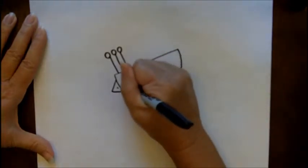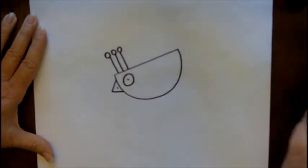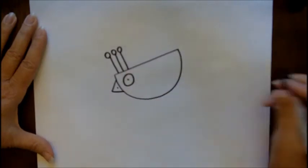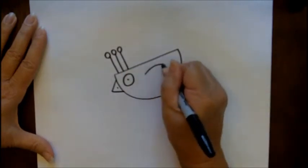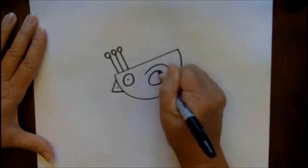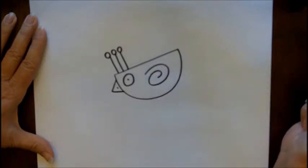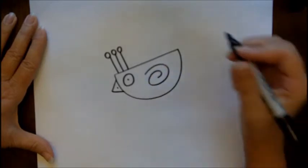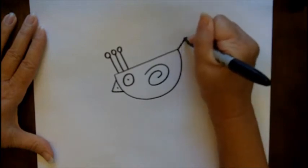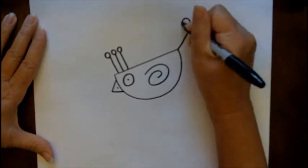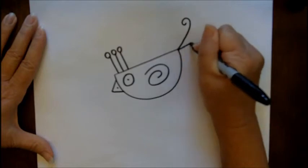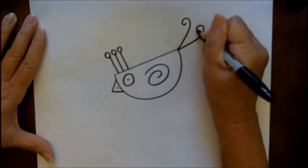Let's give him an eye and for his feather we're just going to do a swirl in the middle of his body. For his tail, straight line out and then little swirl at the end, another straight line out...